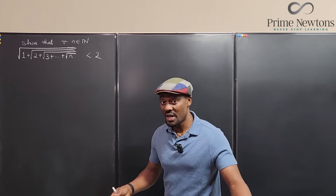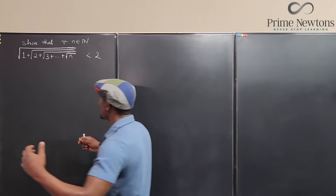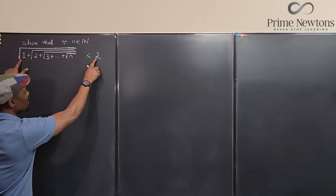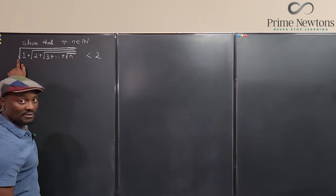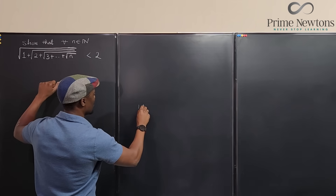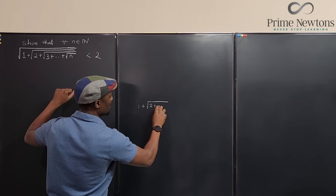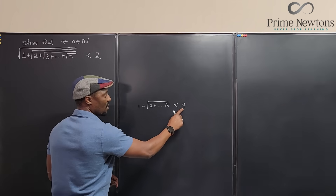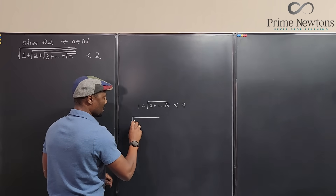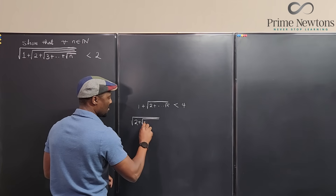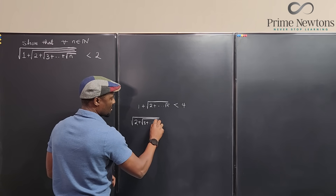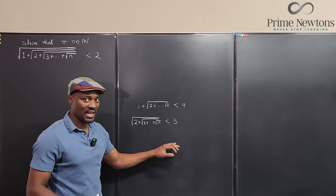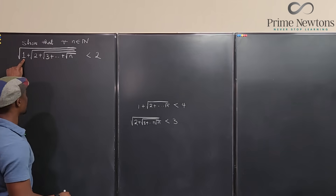Let's see the reasoning behind this. If I assume it is true, I can square both sides to remove the first radical — giving me 1 plus the square root of 2, plus all the way to the square root of n, squared, less than 4. If I subtract 1 from both sides, I get 2 plus the square root of 3 plus the rest, less than 3. Notice the pattern: when I had 1 here it was less than 2, now that I have 2 here it is less than 3.